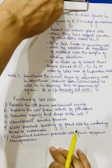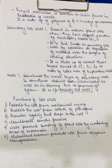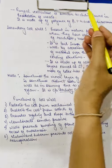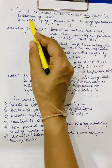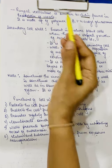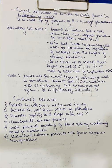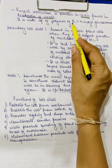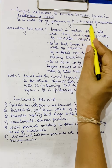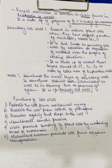Fungal cellulose is similar to chitin, which is also found in the exoskeleton of insects. Both the exoskeleton of insects and the cell wall of fungi are made of chitin. Chitin is a polymer of beta-1,4 N-acetyl glucosamine.